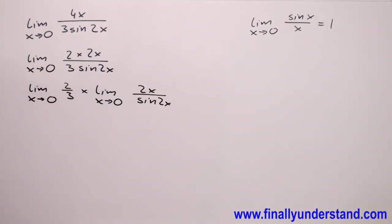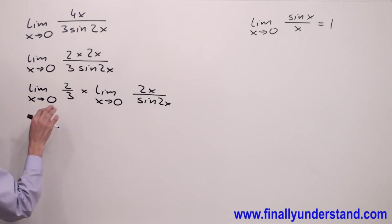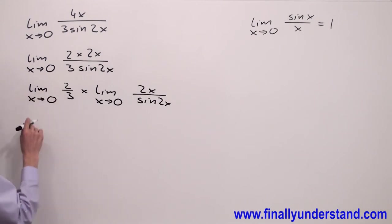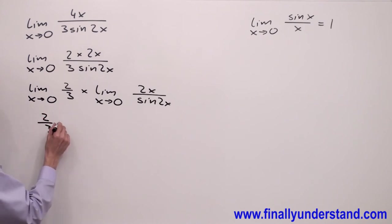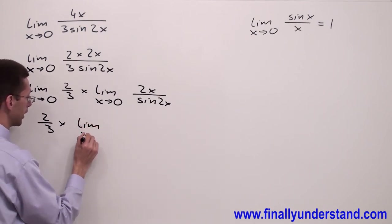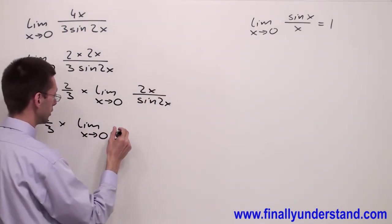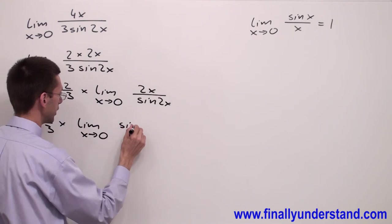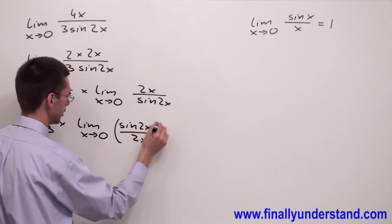I use the theorem for the limit of a product. The limit of a product can be rewritten as the product of limits. The limit of a constant is equal to the constant. That's why this is equal to 2/3 times limit x approaching 0. And I have to find the reciprocal of it — sin 2x over 2x to the power negative 1.